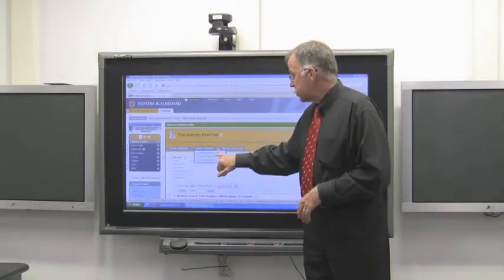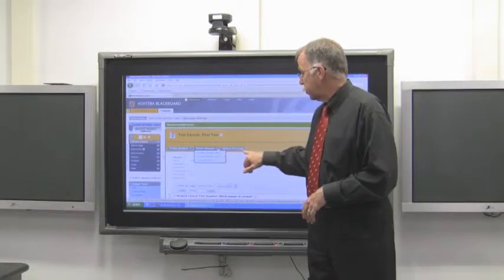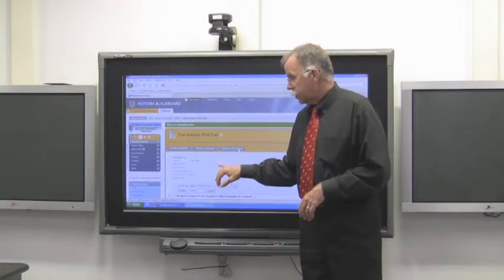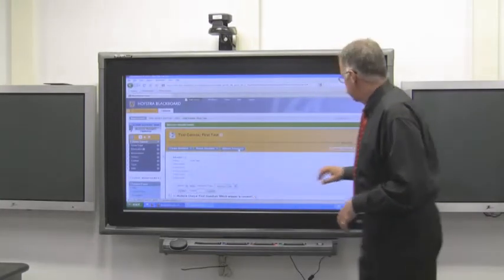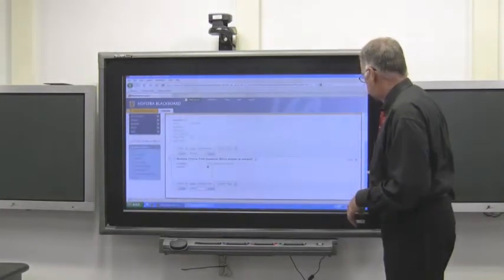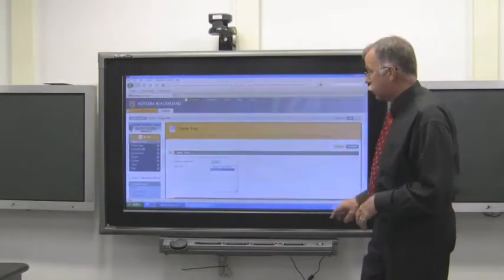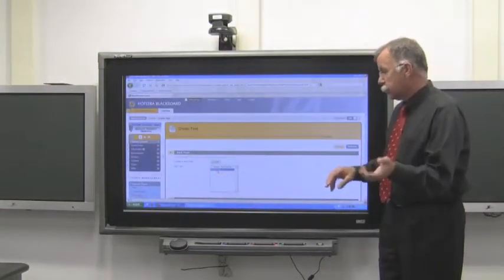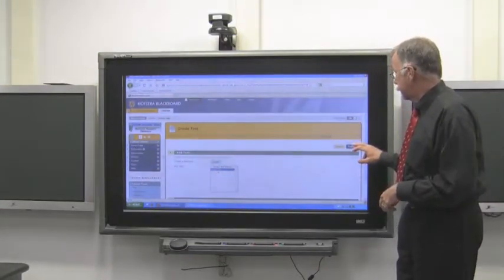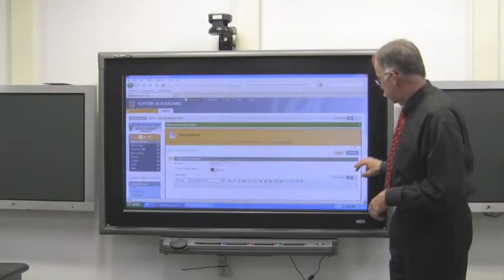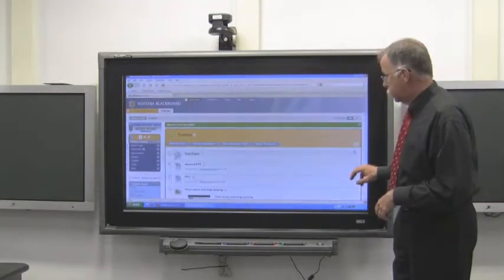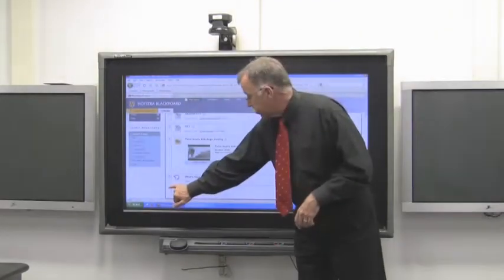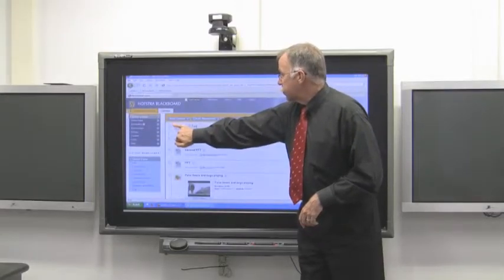You can also reuse questions if you have questions up already. Or upload questions if you have questions on your computer from a publisher or a test bank. When you're done, click OK. And now you have a test to publish. Always with Blackboard, there's two steps. Create the test and then publish it. And now first test is on the bottom. And we're going to move that up. Because that's now the most important thing.